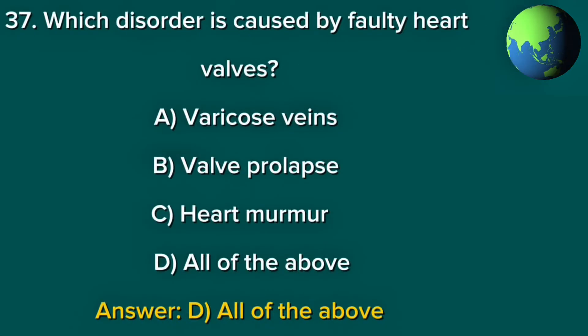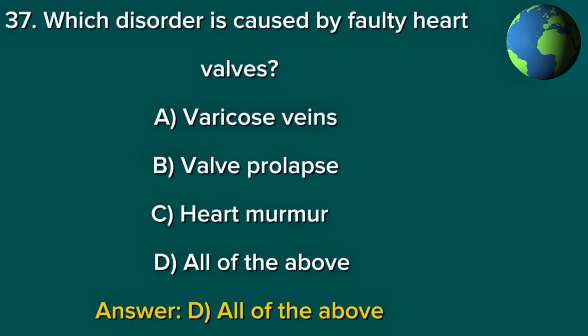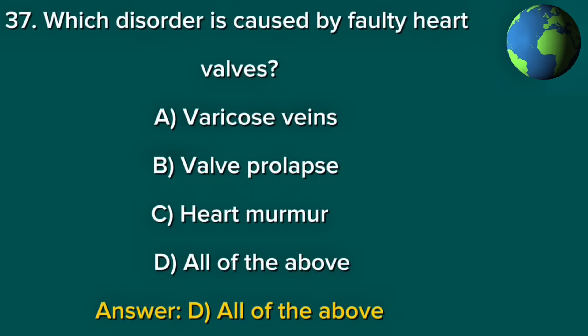Question 37. Which disorder is caused by faulty heart valves? A. Varicose veins. B. Valve prolapse. C. Heart murmur. D. All of the above. Answer: D. All of the above.